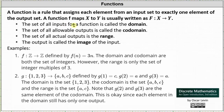The set of all inputs for a function is called the domain. The set of all allowable outputs is called the codomain, and the set of all actual outputs is the range. You may not have referred to codomain in previous math classes, but there is a difference: the codomain is the set of all allowable outputs, while the range is the set of all actual outputs. The output is called the image of the input.